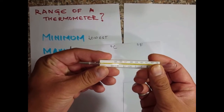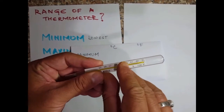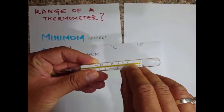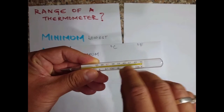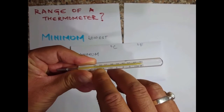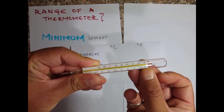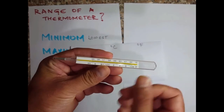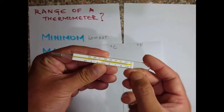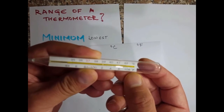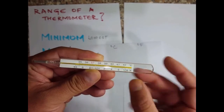Now remember, in a clinical thermometer there are two units given. We have the upper scale which measures the temperature in degree Celsius, and the lower scale measures in degree Fahrenheit. So this thermometer can tell us the temperature in two units: degree Celsius and degree Fahrenheit.